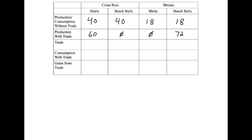Here is the table that you should recognize from class. On the left hand side we have production and consumption without trade. Then production with trade, our trade terms, our consumption with trade, and then our gains from that trade. This might be a little different from your problem set — your problem set says production and consumption before trade and then consumption after trade — but it's the same idea.